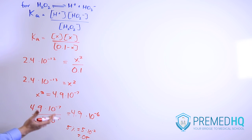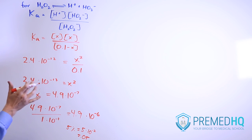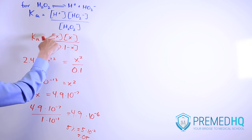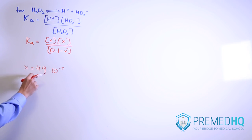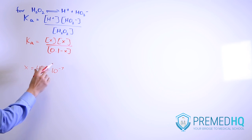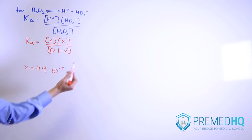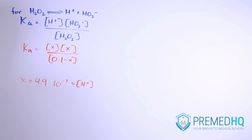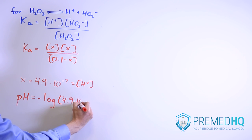Now that we've established the approximation is valid, we use X = 4.9 × 10⁻⁷ as our proton concentration. Our last step is to use the pH formula — pH equals the negative logarithm of the H⁺ concentration — plugging in 4.9 × 10⁻⁷.